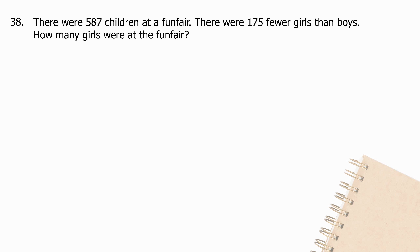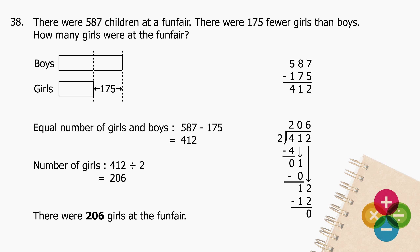Question 38: There were 587 children at a funfair. There were 175 fewer girls than boys. How many girls were at the funfair? To find the equal number of girls and boys, subtract the additional 175 boys from 587 — the difference is 412. Divide 412 by 2 and the quotient is 206. There were 206 girls at the funfair.